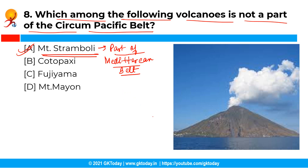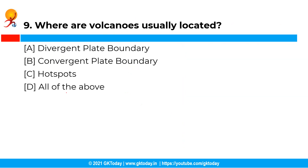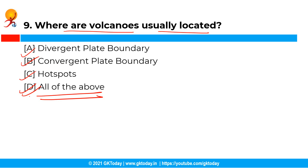The next question is: where are volcanoes usually located? The correct answer is option D — all of the above. Volcanic activity takes place at the divergent and convergent plate boundaries, and at the same time, volcanoes also take place at hot spots.